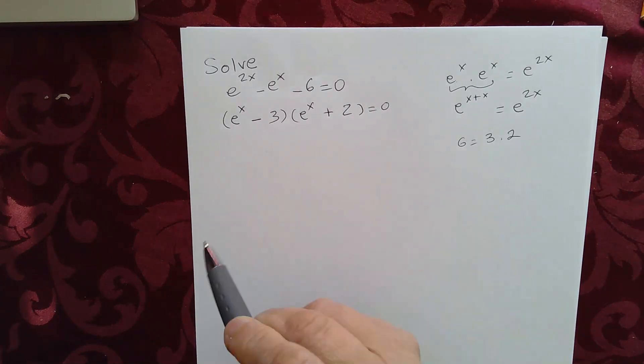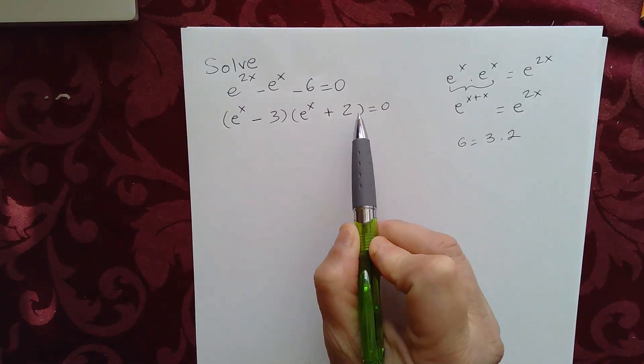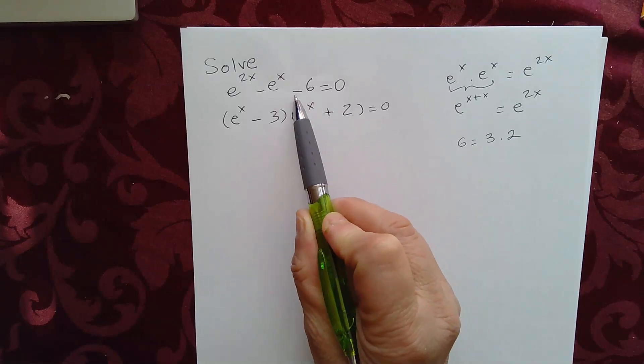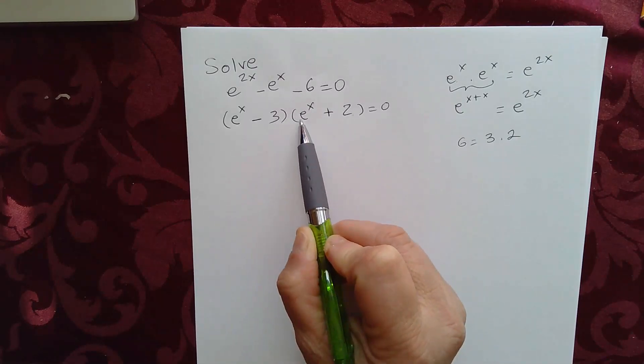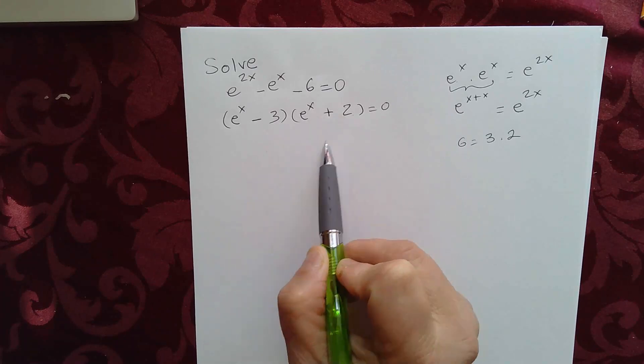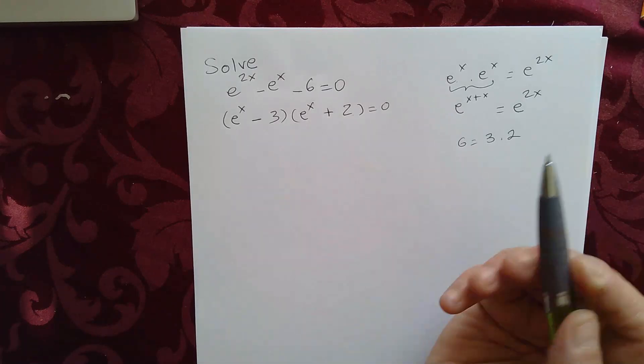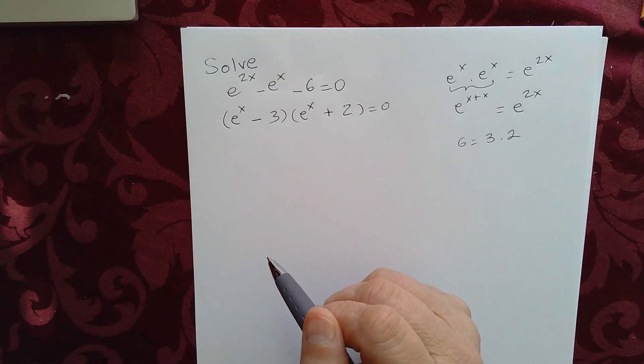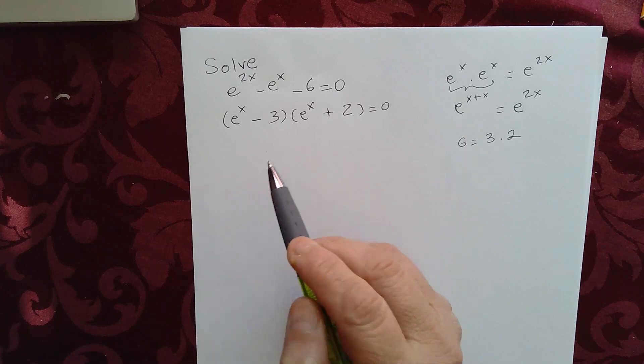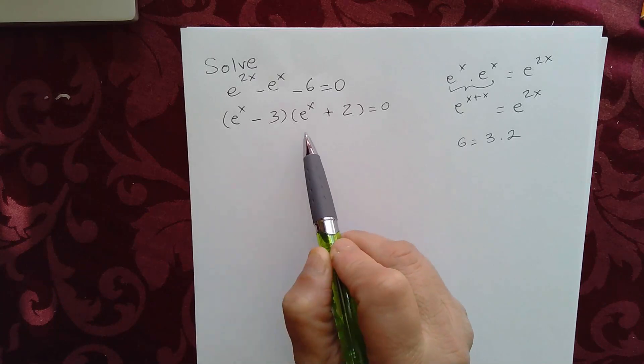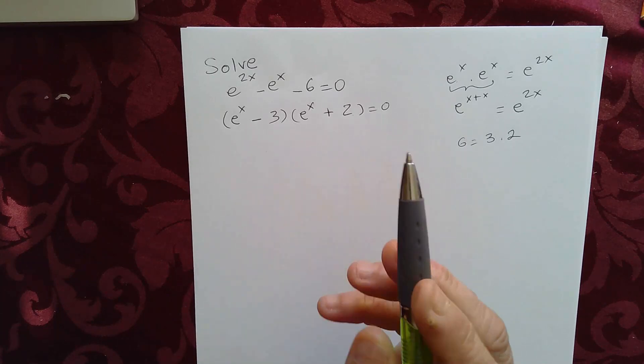So you can check it if you want. Negative 3 times 2 is negative 6. That's what you have. And to check the middle term, you can multiply this and multiply this and add them together, or you can do FOIL again. You should be able to get this back. So that's what we have, e to the x minus 3 times e to the x plus 2 equal to 0.